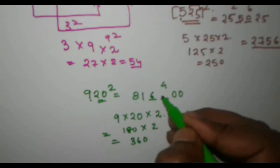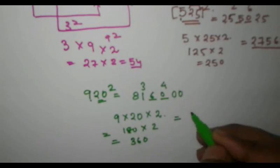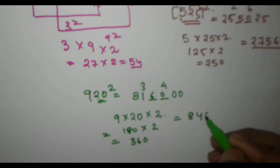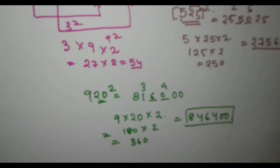Again we will write 60 and 3 is the carry. So if we add it, we will get 8, 4, 6, 4, double 0. So friends, this is the answer. I hope friends this video will be some help to you.